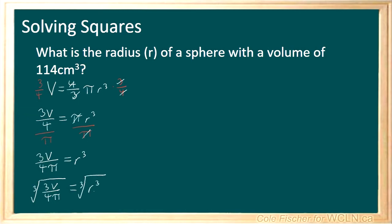So the cube root of r cubed gives us r. So from here, r is now equal to the cube root of 3v over 4pi.